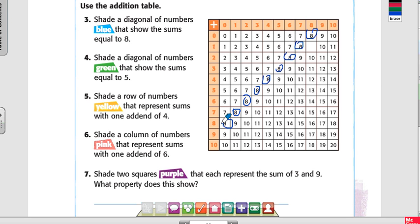Shade a diagonal of numbers green that shows the sum equal to five. So what am I going to color in? All fives.